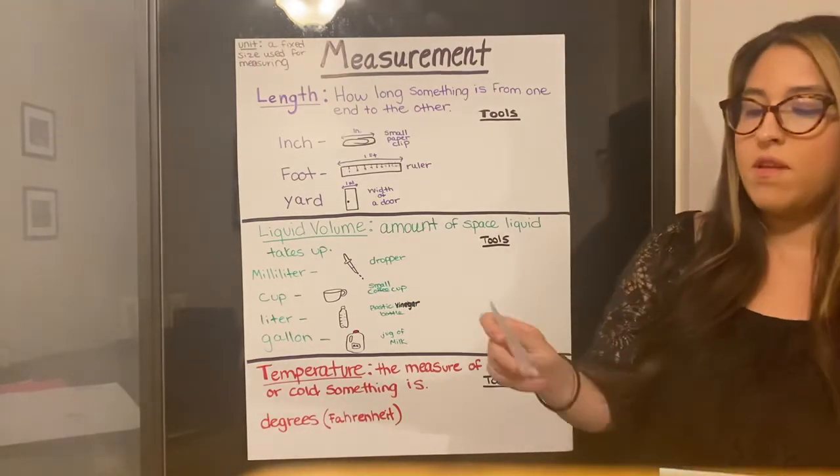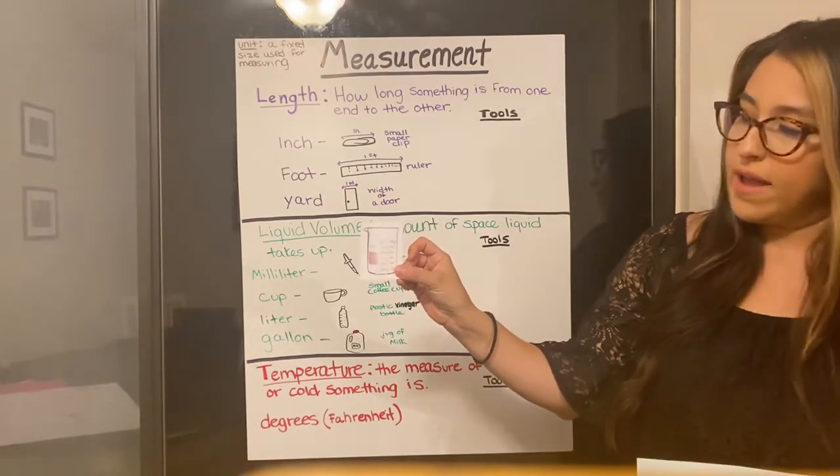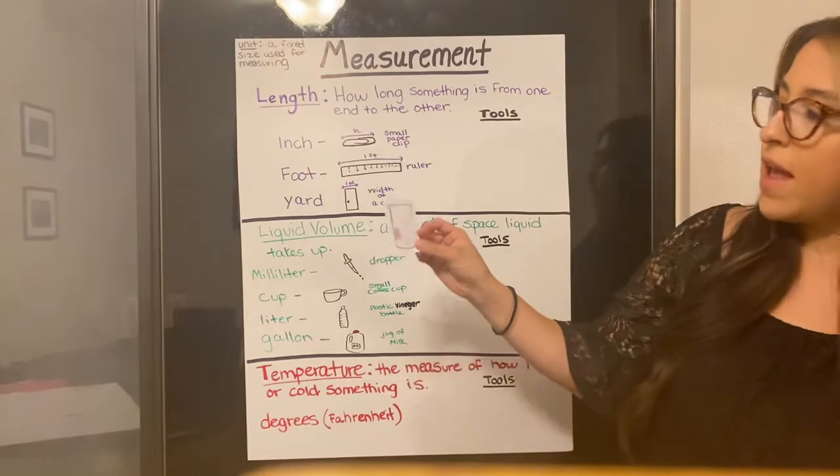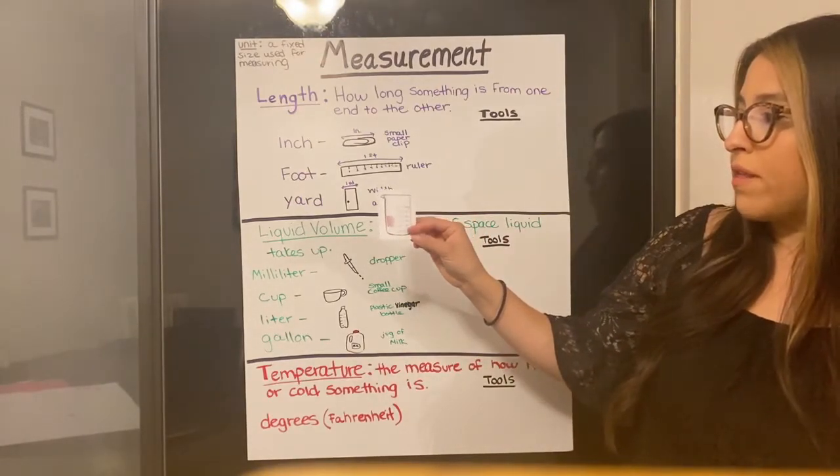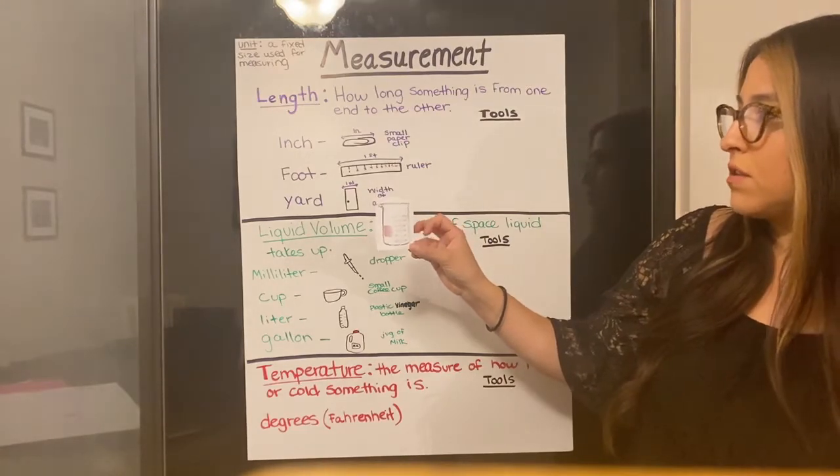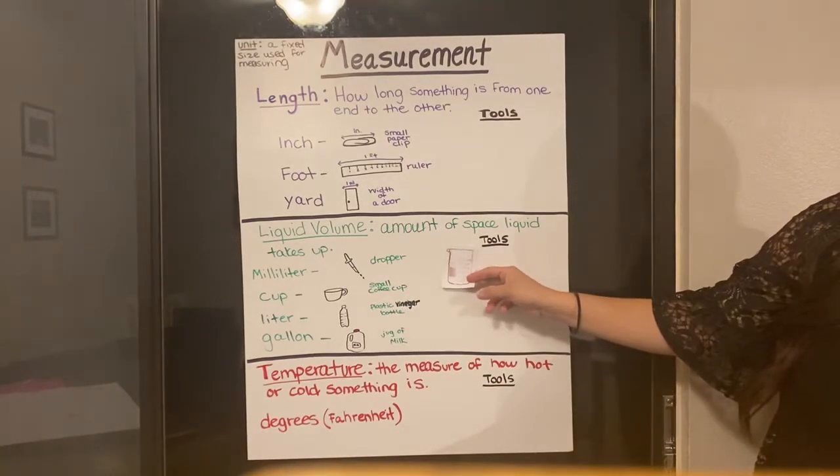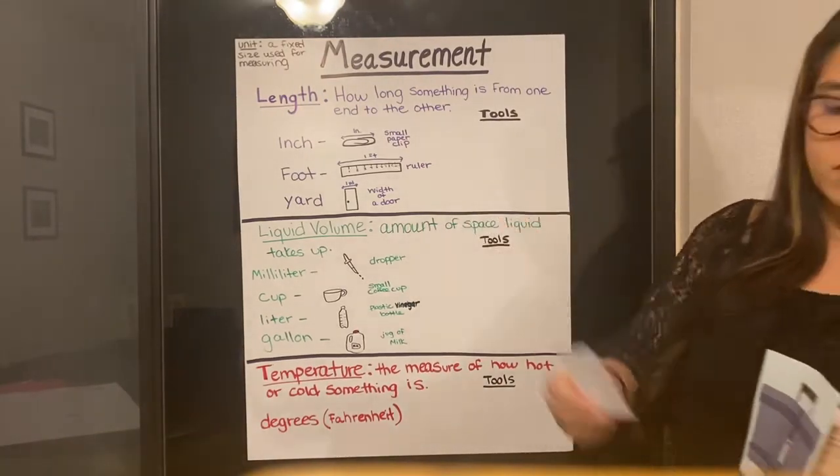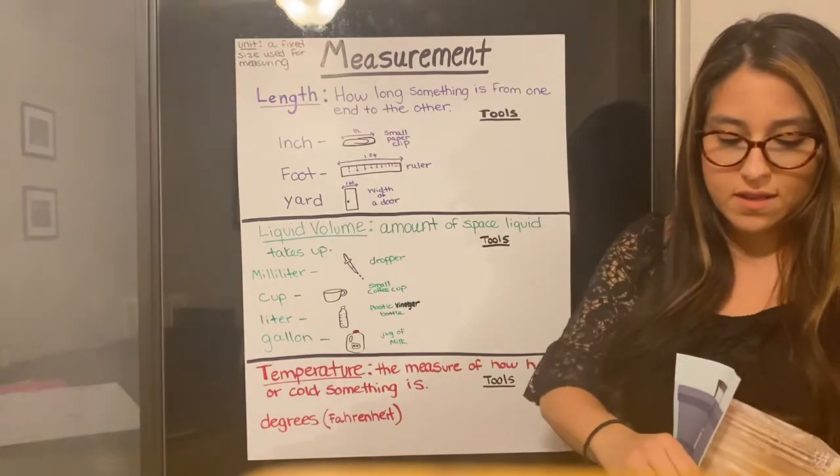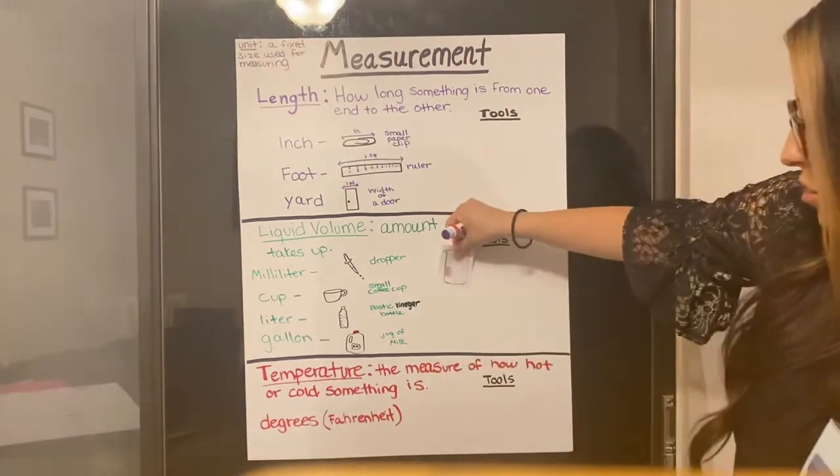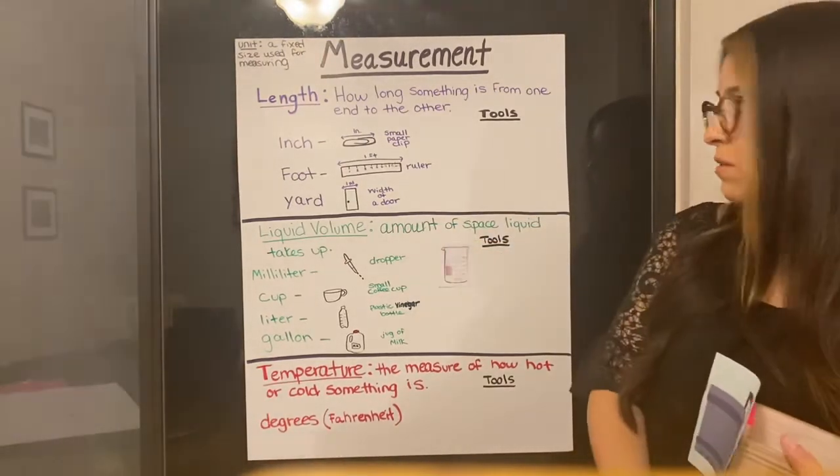First we have a beaker. It's a glass beaker, and this one is marked with milliliters. So let's see, where would we put that? We would put that over here by our milliliters. It's a little bit on the smaller side. A lot of times you'll use these in science class. So I'm going to go ahead and put that on our chart, our beaker.